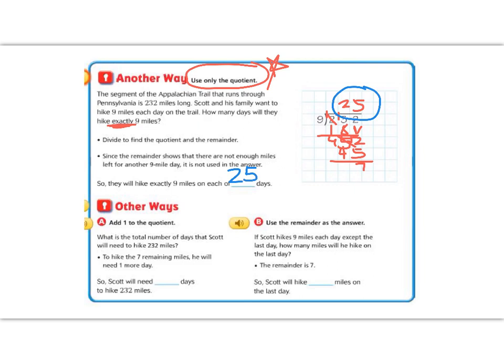In the other two ways, we're going to use our remainder in a different way. So other way A, add 1 to the quotient. What is the total number of days that Scott and his family will need to hike 232 miles? Well, it says in order to hike the remaining 7 miles, because remember we had the remainder. They can't just stop in the middle of the hike and give up and live on the hiking trail now forever. So we need to add one more day in order for them to get home. So instead of 25 days, it will take them 26 days.